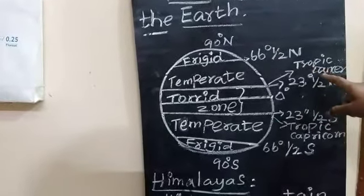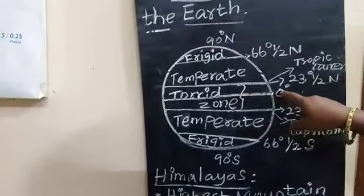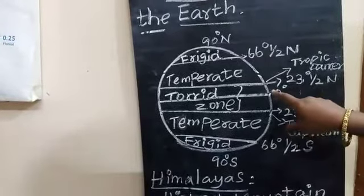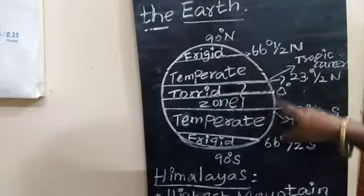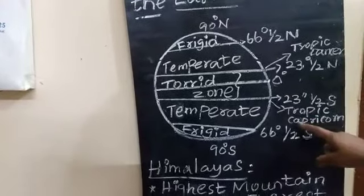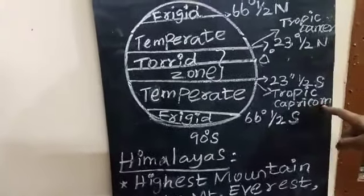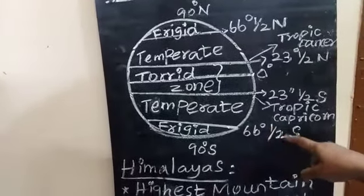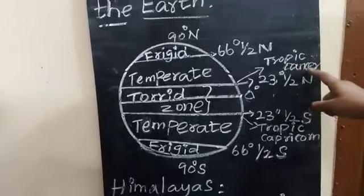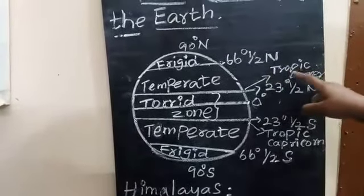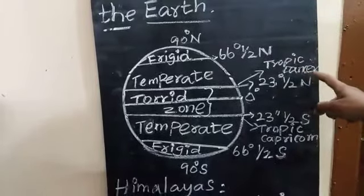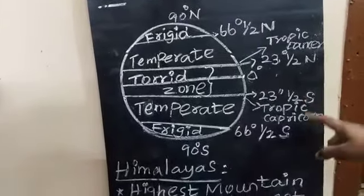The angles shown are 66 and a half degrees from the north direction. At 23 and a half degrees north is the Tropic of Cancer. The center portion is called the equator, which is always at zero degrees and forms a circle around the earth. At 23 and a half degrees south is the Tropic of Capricorn — C-A-P-R-I-C-O-R-N — and at 66 and a half degrees south is the last frigid line. These lines help us identify the different heat zones of the earth's surface.